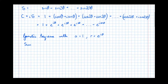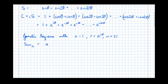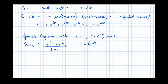You'd be forgiven for thinking it's 20 terms, but actually there are 21 terms because we need to include the initial 1. So counting from 1 all the way up to the 21st term, n = 21. Using the formula from your formula book, the sum of the first 21 terms is a times (1 minus r^n) over (1 minus r), which gives 1 times (1 minus r^21) over (1 minus r). There are 21 terms because we have terms for cos 0 through cos 20 theta, plus that leading 1.